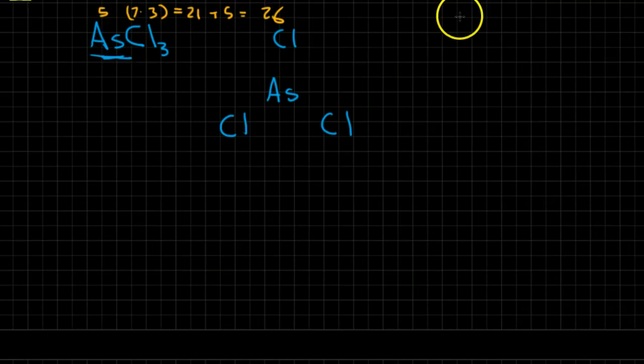So I've got 26 electrons. And I'm going to go two, four, six. So I subtract those six, and that gives me 20.